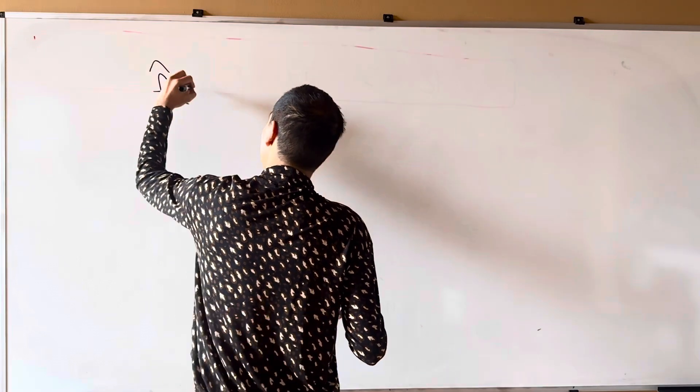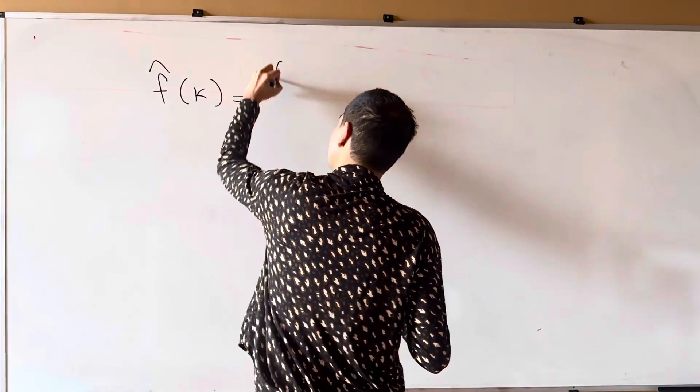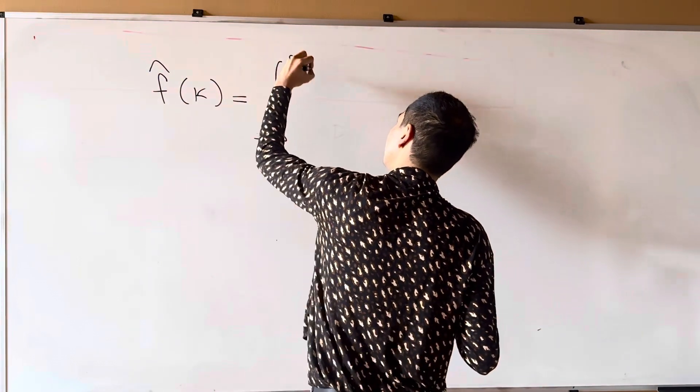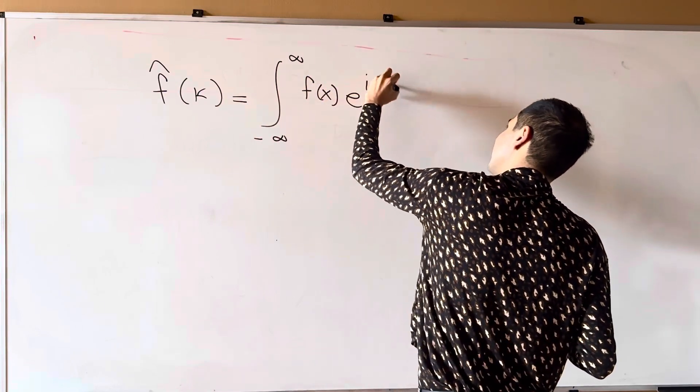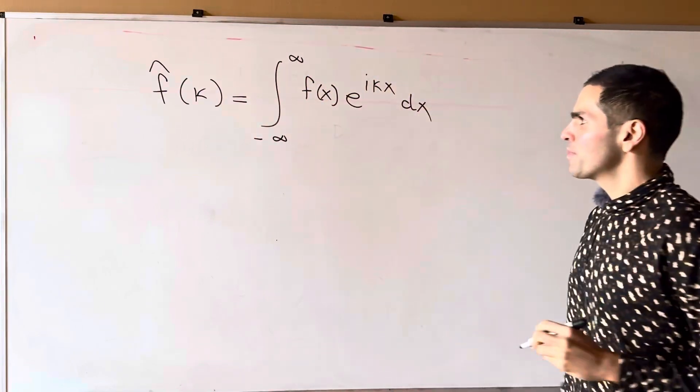It deceivingly looks like the Fourier transform. So I want to remind you, f hat of kappa is the integral from minus infinity to infinity of f of x e to the i kappa x dx.